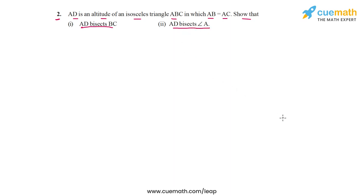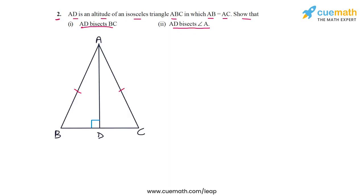Here is a figure representing what is given in the problem. We have an isosceles triangle with AB equal to AC. AD is the altitude through A and it intersects BC at D. We have to show that AD bisects BC, meaning BD equals CD, and that AD bisects angle A, meaning angle BAD equals angle CAD.